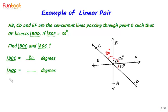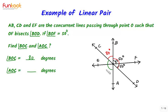Now, how do we find angle AOC? For finding angle AOC, we can have two approaches. The first approach is that angle AOC is vertically opposite to angle BOD, and we know that vertically opposite angles are equal. Angle BOD is 100 degrees, so angle AOC will also be 100 degrees.